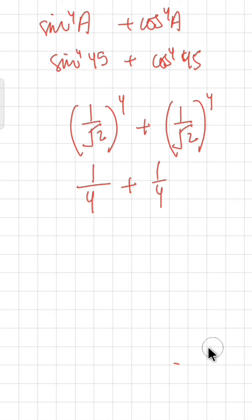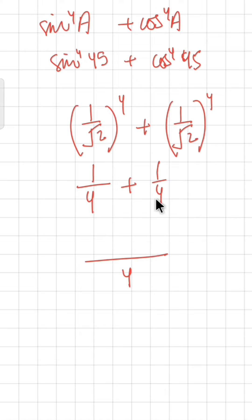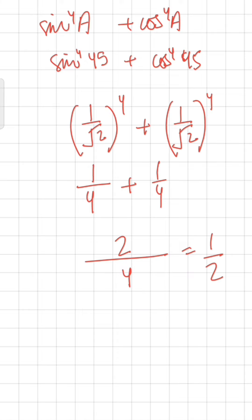Now we have 1/4 plus 1/4. The denominator is the same, so we add the numerators: 1 plus 1 equals 2. So the result is 2/4. Simplifying, the final answer is 1/2. I hope it is clear.